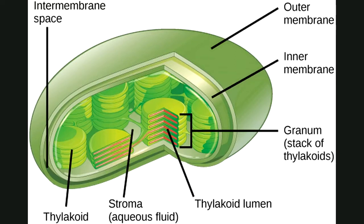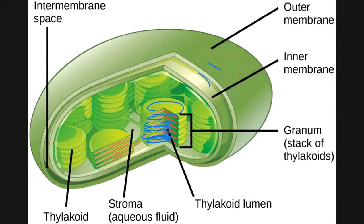Just as cellular respiration is associated with the mitochondria, photosynthesis is associated with the chloroplast. The chloroplast has a double membrane — an outer membrane and an inner membrane. Interior to that, we have little discs called thylakoids or thylakoid discs, and a full stack of these discs is called a granum.